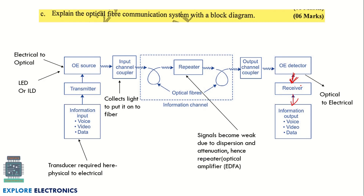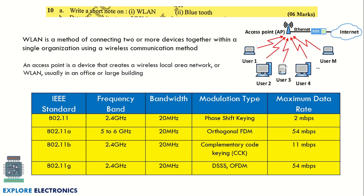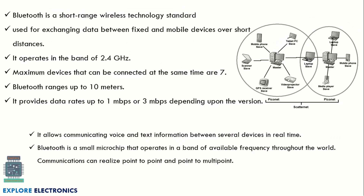The last questions include a short note on WLAN and Bluetooth. WLAN is a method of connecting two or more devices within a single organization using wireless communication — W stands for wireless and LAN for local area network. Show the diagram of users wirelessly connected to an access point connected to the internet, and include the different standards, frequency bands, and maximum data rates. For Bluetooth, explain piconet, scatternet, operating band, device connection limit, range, and communication method.